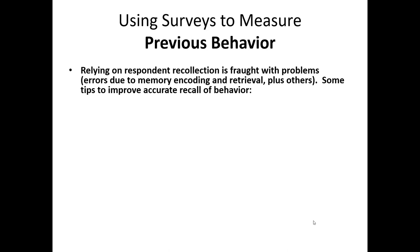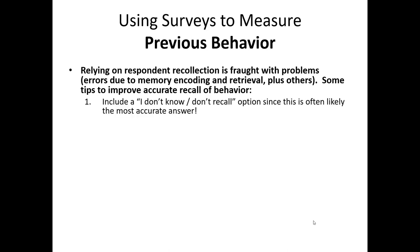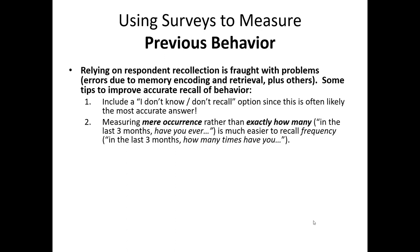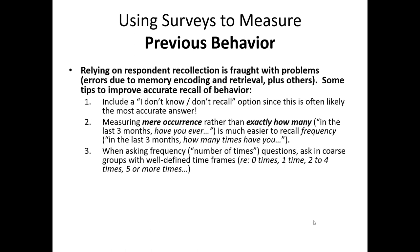When we're asking people to recall their behaviors, we should definitely include an 'I don't know' or 'I don't recall' option — this is often the correct answer. We also know that measuring near occurrence rather than exactly how many times someone did something is much easier to recall. Or, if we want to measure how many times someone does something, it's generally better practice to offer coarse bins of ranges rather than precise values.